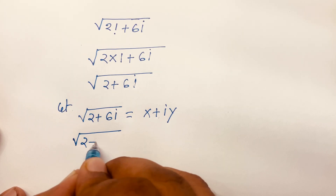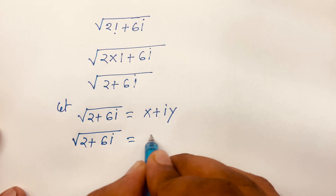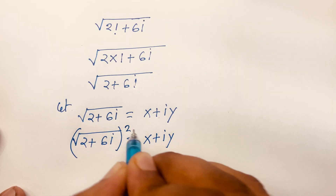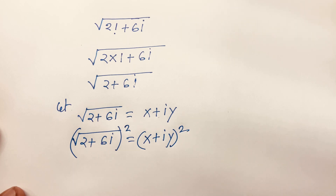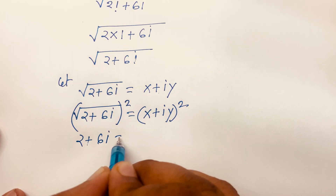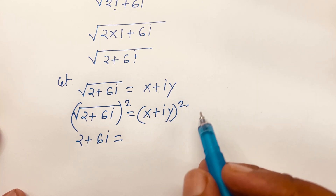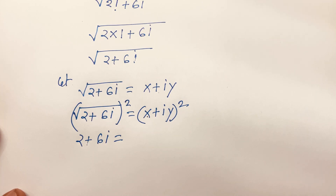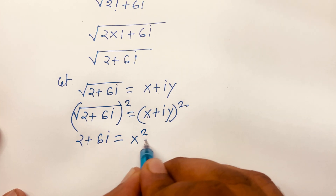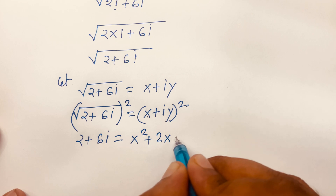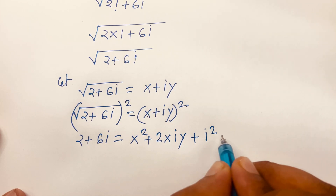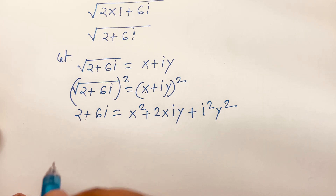Let square root of (2 + 6i) equal x + iy. Squaring both sides, we get 2 + 6i = (x + iy)². Expanding using (a + b)² = a² + 2ab + b², this gives x² + 2x(iy) + (iy)².